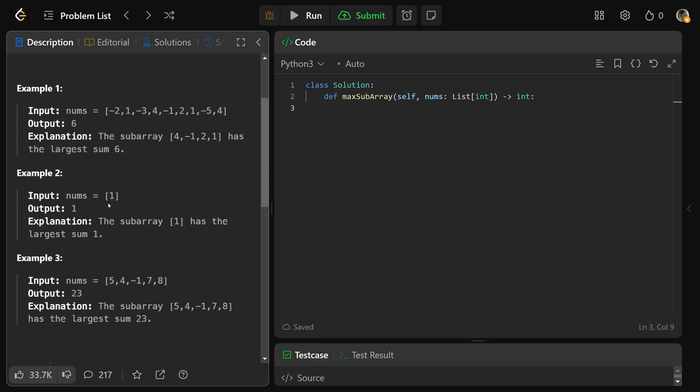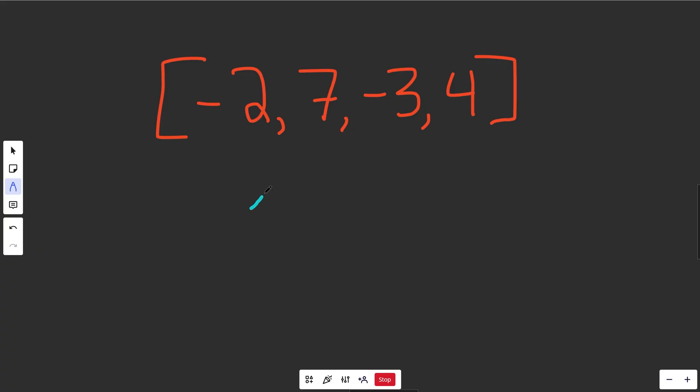I don't know why they give these really silly examples. Of course, if it's just 1, the sum is going to be 1. Let's say we were given this array of numbers right here, and you wanted the sum of the maximum subarray. That is actually going to be these set of numbers right here. It's going to be 7 minus 3 is 4, plus 4 is a total of 8.